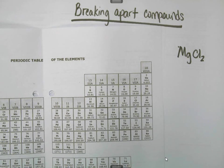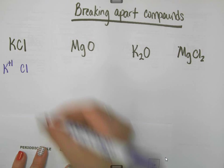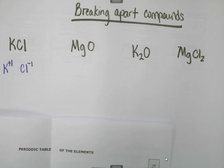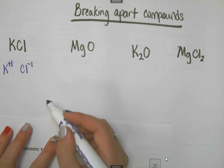They gain to get to 8. And if it has 7, it needs to gain 1. You are adding a negative 1 to something that has a charge of 0. So that makes chlorine's charge a negative 1. I'm not going to keep explaining it in quite as much detail as we keep going.